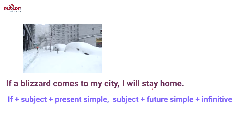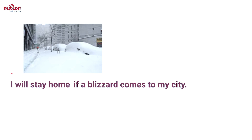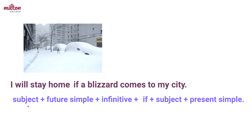In some ways the first conditional is a little bit complicated, but in one way it's also a little bit flexible, because we can change the order of the words in this sentence and the meaning will be exactly the same. The sentence can also say: "I will stay home if a blizzard comes to my city." Although we change the order of the words, the meaning is exactly the same. What changes is the structure — and in this version, we don't need a comma.